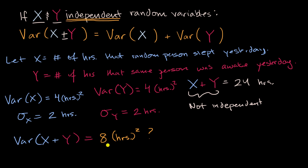Well, that doesn't make any sense, because we know that a random variable that is equal to X plus Y is always going to be 24 hours. In fact, it's not going to have any variation. X plus Y is always going to be 24 hours. So for these two random variables, because they are so connected and not independent at all, this is actually going to be zero. There is zero variance here.